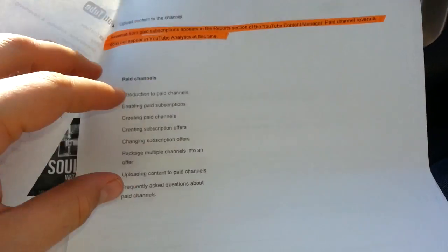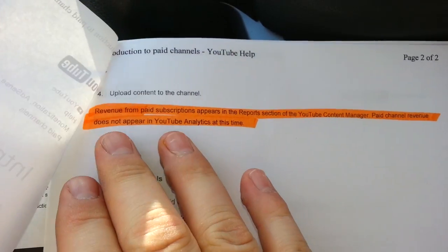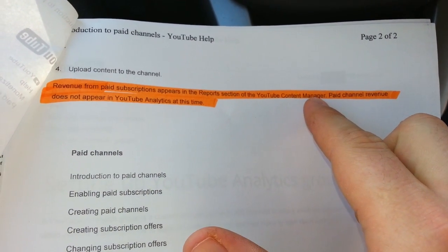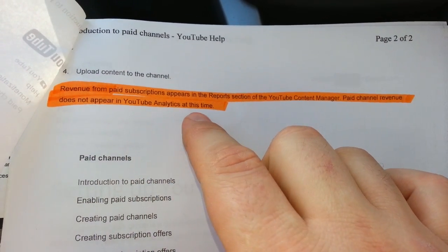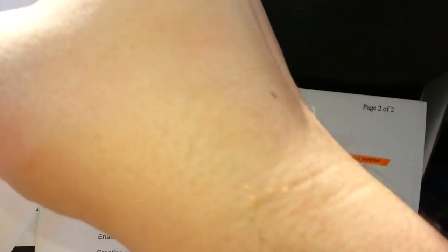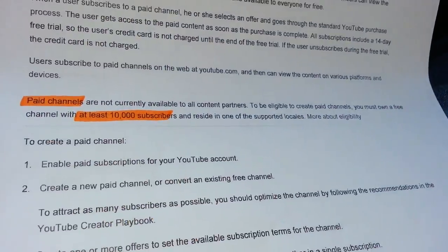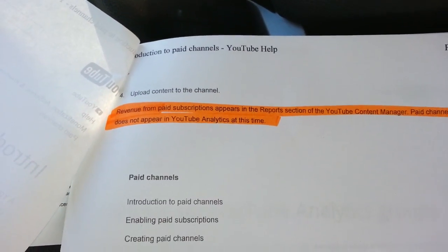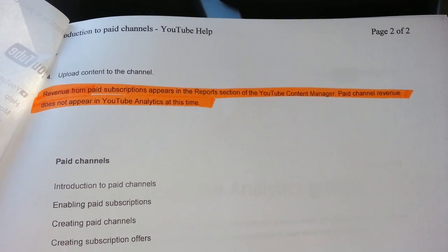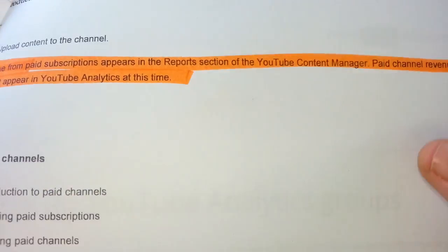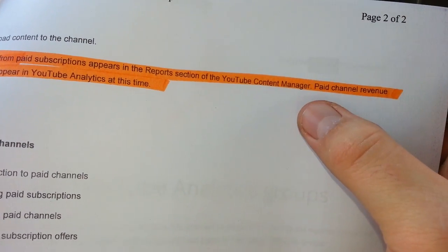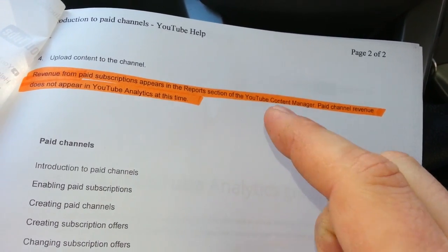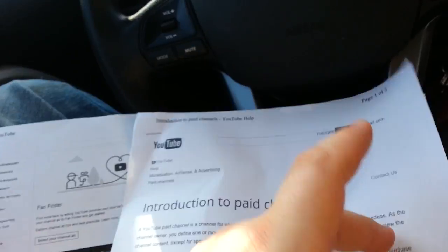Right here is the big thing. It says revenue from paid subscriptions appears in the reports section of the YouTube content manager. Paid channel revenue does not appear in YouTube Analytics at this time. So that means if you get a paid channel with at least 10,000 subscribers, then you have the ability to get the YouTube content manager — the CMS manager — and you don't have to be one of the old partners anymore. That is a big, wonderful thumbs up. Now you will be able to track all your channels and groups in one place. Thank you, YouTube, for sharing that with us.